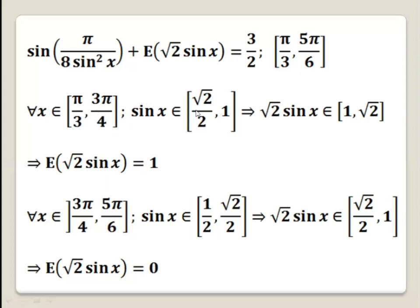For every x in the interval pi over 3 to 3 pi over 4, the values of sine x will be between square root 2 over 2 and 1. Multiplying by radical 2, this interval becomes 1 to radical 2. So for every x in [pi/3, 3pi/4], square root 2 times sine x belongs to 1 and radical 2 — numbers like 1, 1.01, 1.1, 1.2, etc., up to square root 2. So the integer part of any number in this interval will be 1. Therefore, for every x in this interval, the integer part of square root 2 times sine x equals 1.